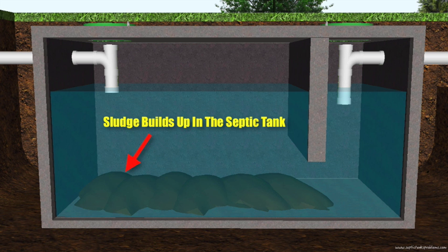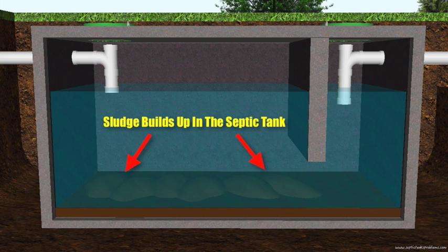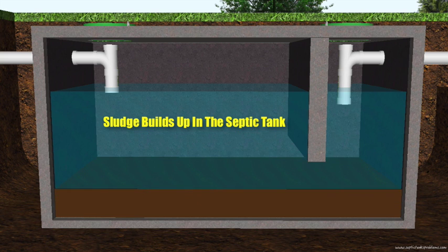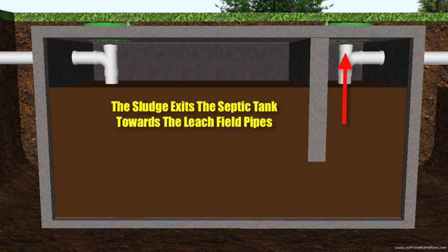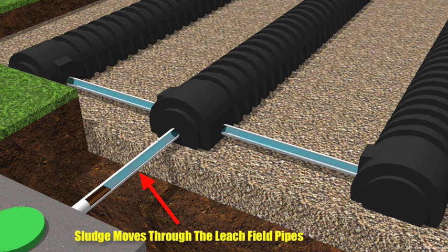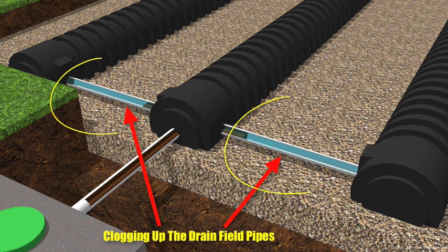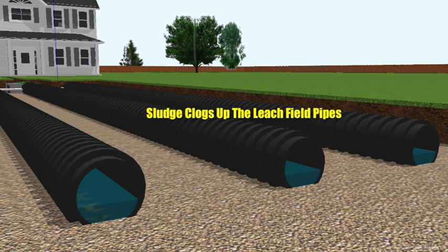The biggest problem with every septic tank is sludge. Over time, solids settle on the bottom of the septic tank. If the tank is not pumped out every year, this sludge builds up and eventually exits the septic tank toward the drain field pipes. The sludge makes its way through the small connecting pipes and completely clogs them up, restricting the flow of wastewater. When the sludge reaches the drain field pipes, it clogs up the entire system, trapping wastewater so it can no longer be discharged or treated.